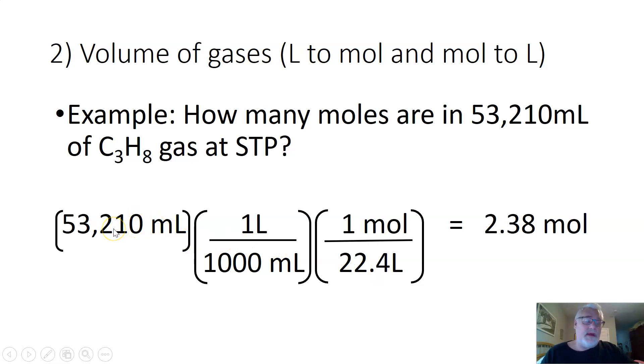And so what you want to do, I think this is the easiest way. So if you have your calculator out if you go 53,210 divided by one thousand enter. And then what are you doing on the next one? Oh divided by 22.4. Enter. And then you will end up getting this number.